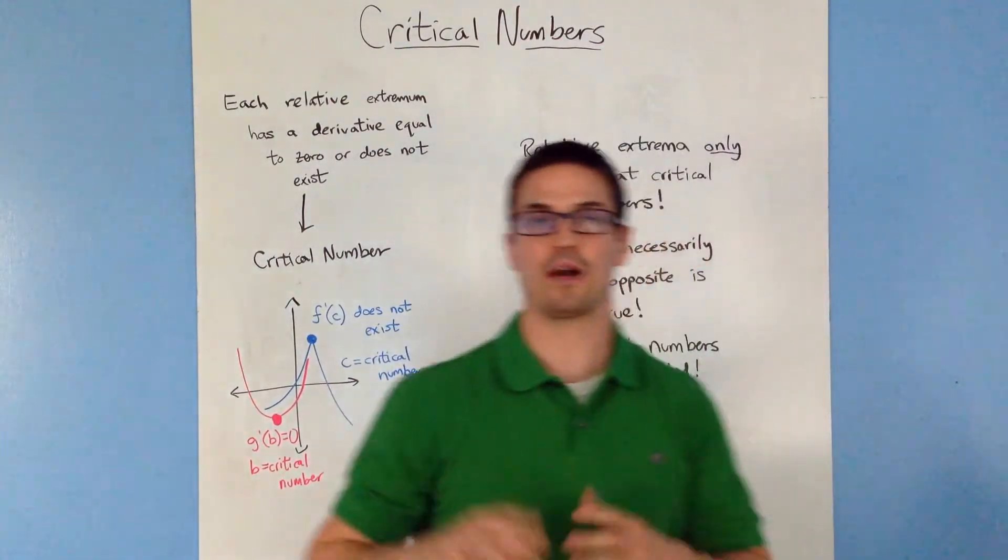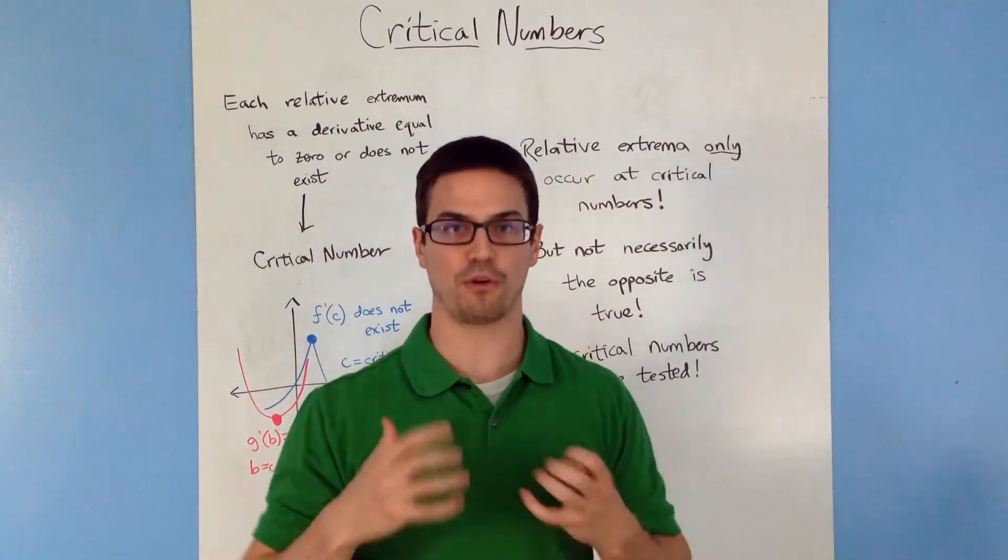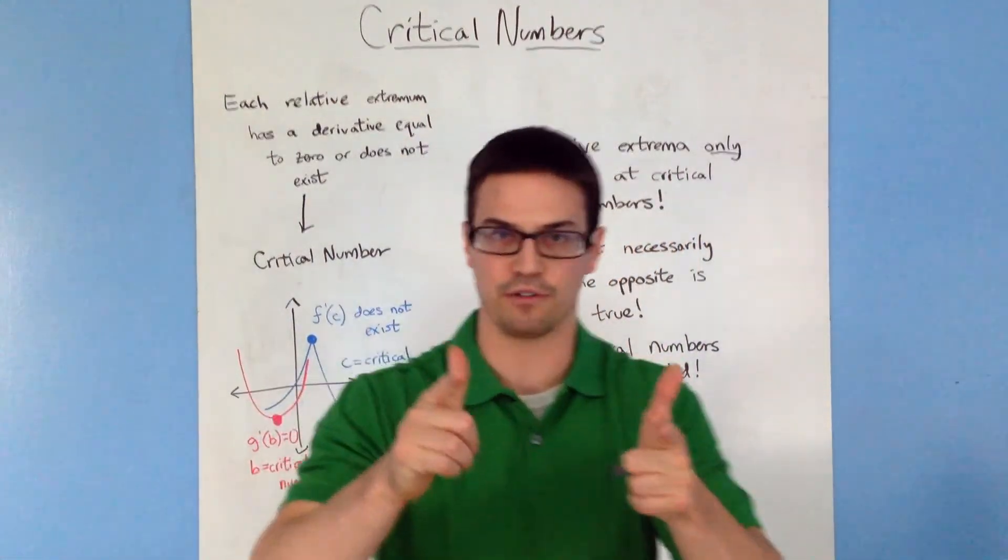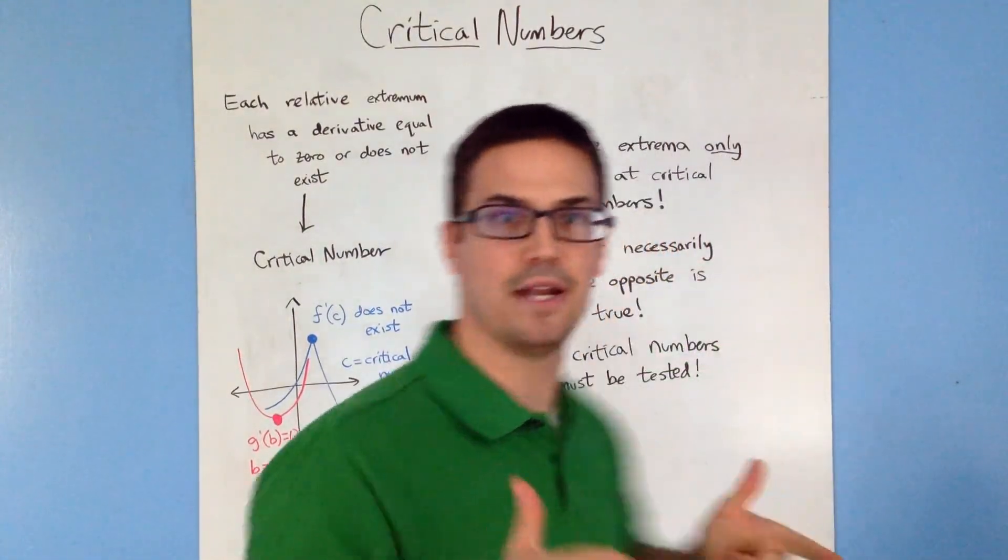This video is just primarily to get you accustomed to what a critical number is. So derivative is equal to zero or the derivative does not exist. That is your critical number. If you have any questions about this, let me know.